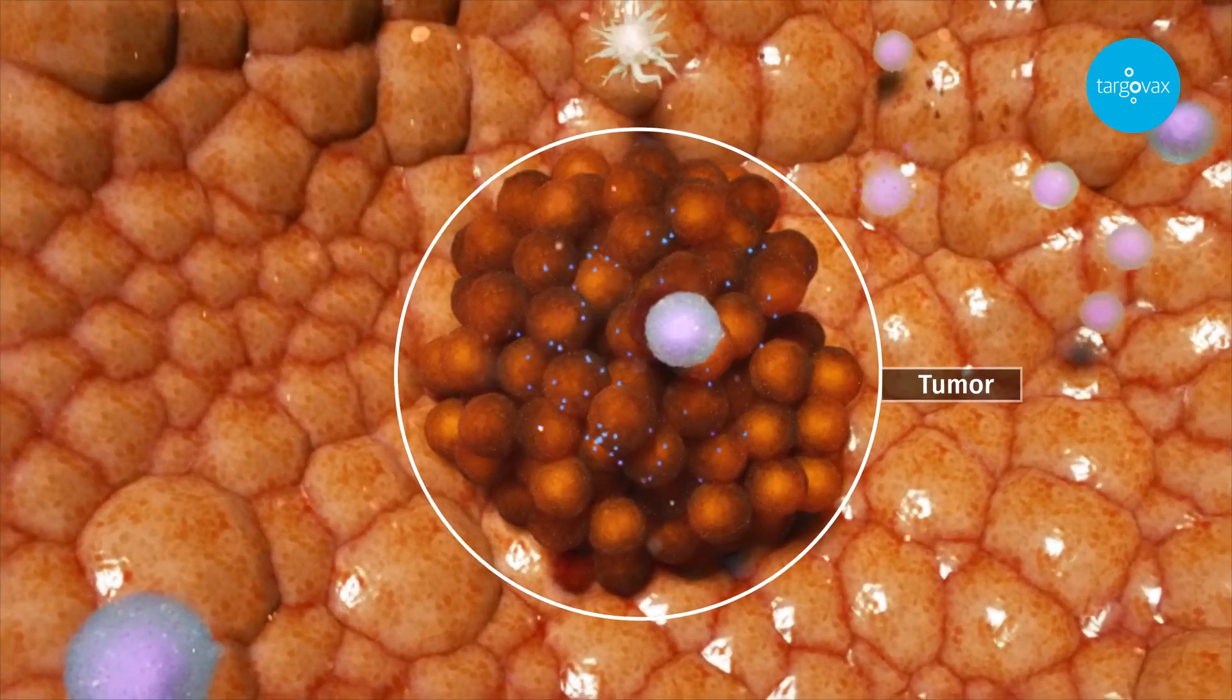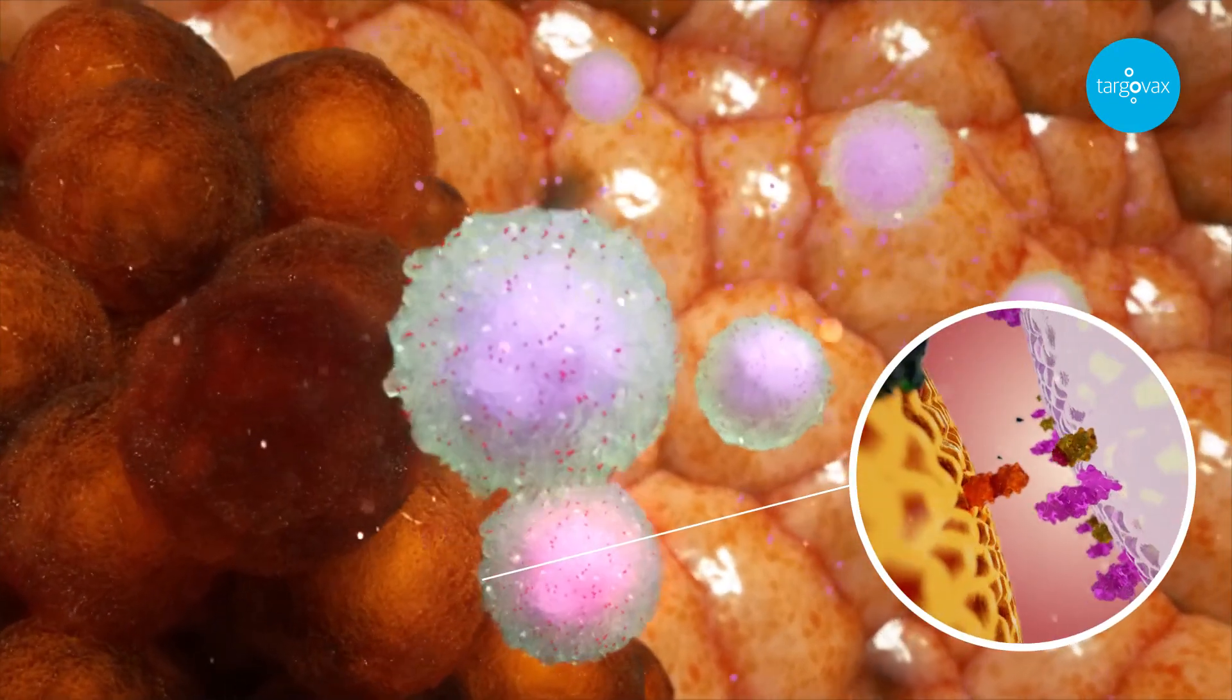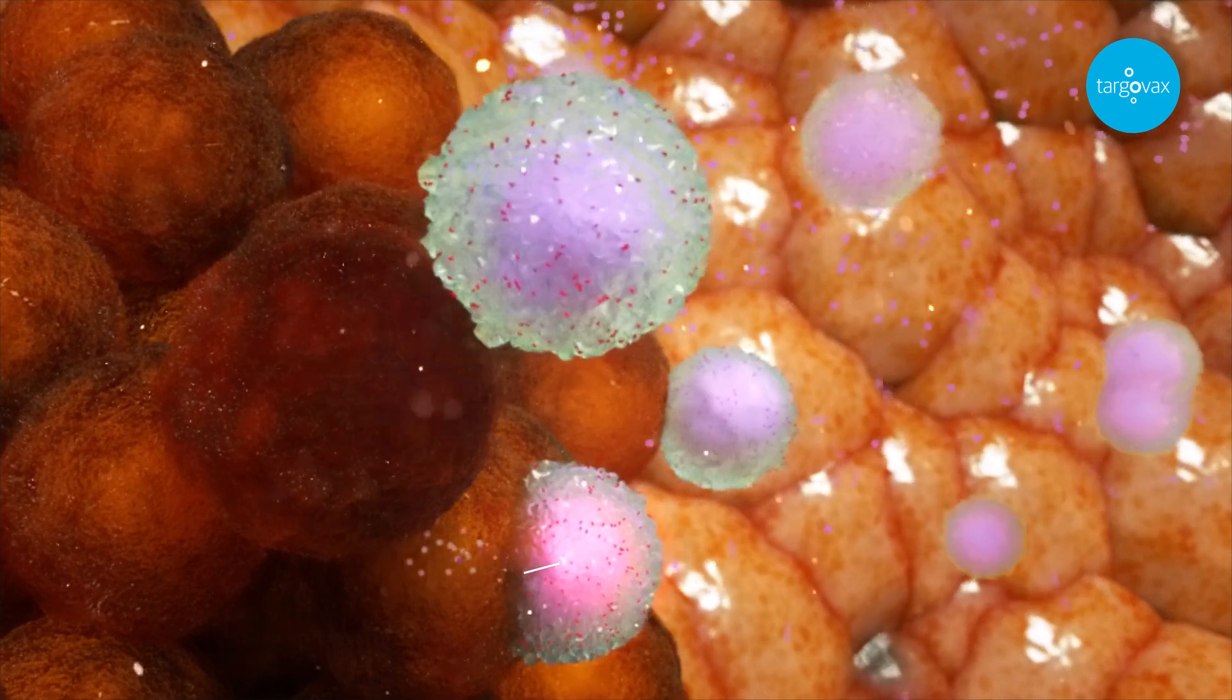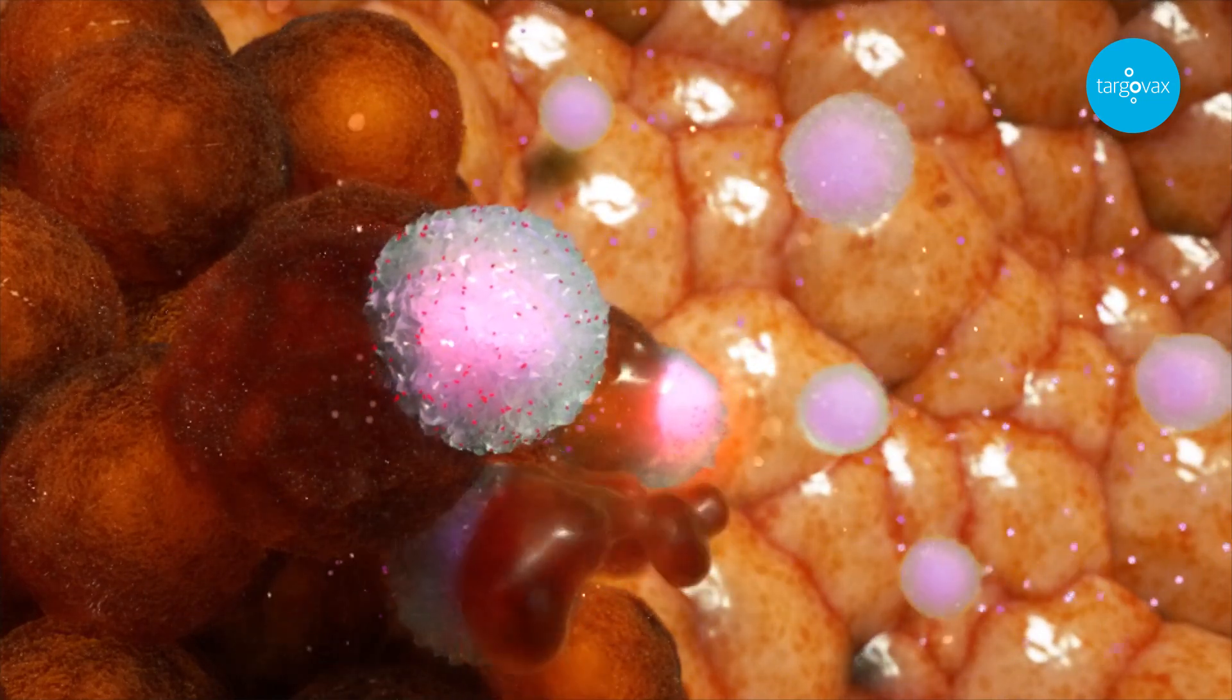When a T-cell encounters a cancer cell expressing the particular tumour antigens it has been activated to recognise, it docks to the target cancer cell and secretes powerful enzymes which kill the cancer cell.